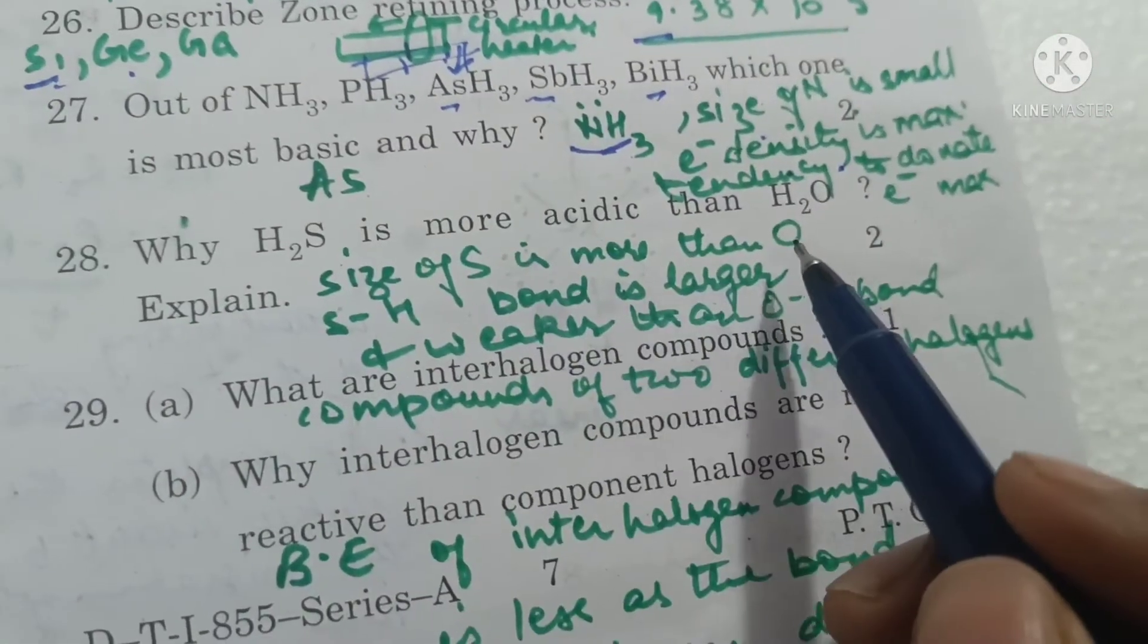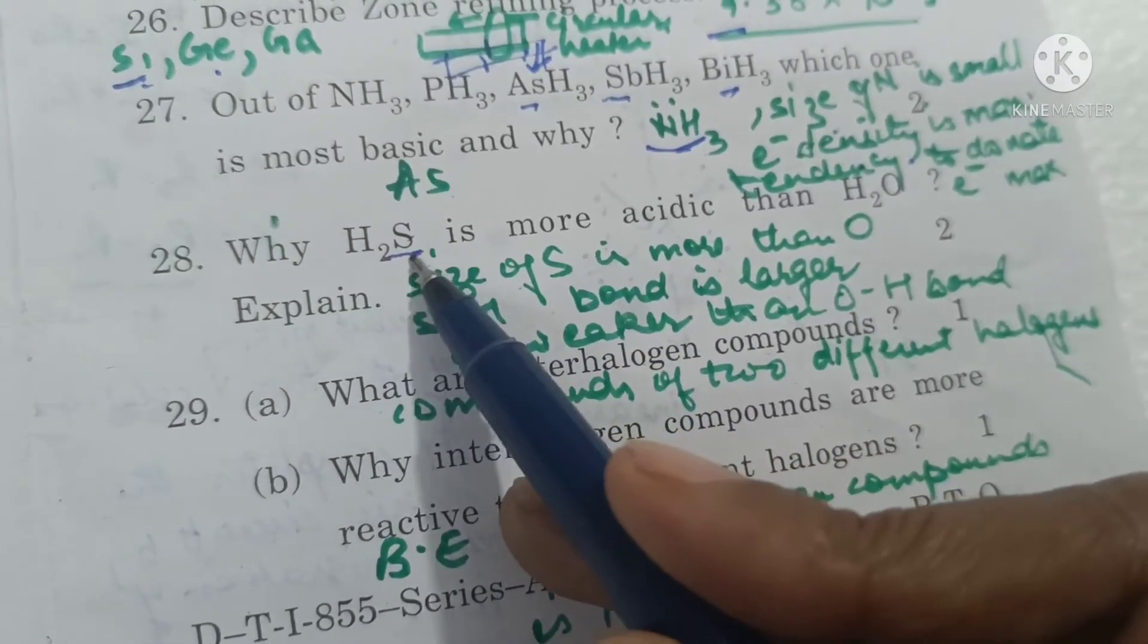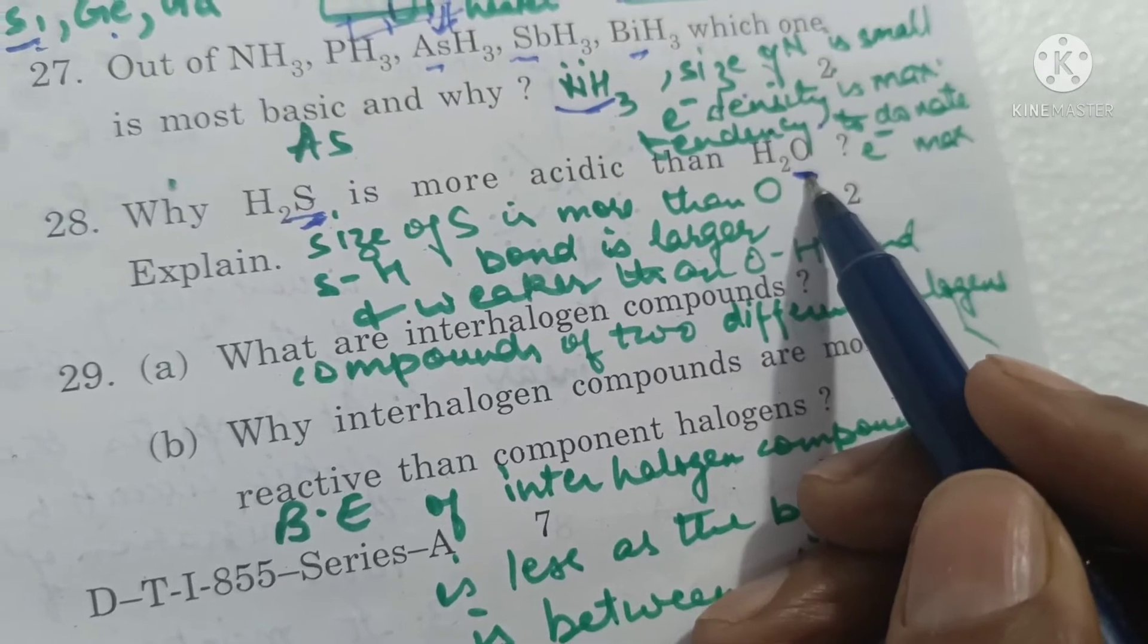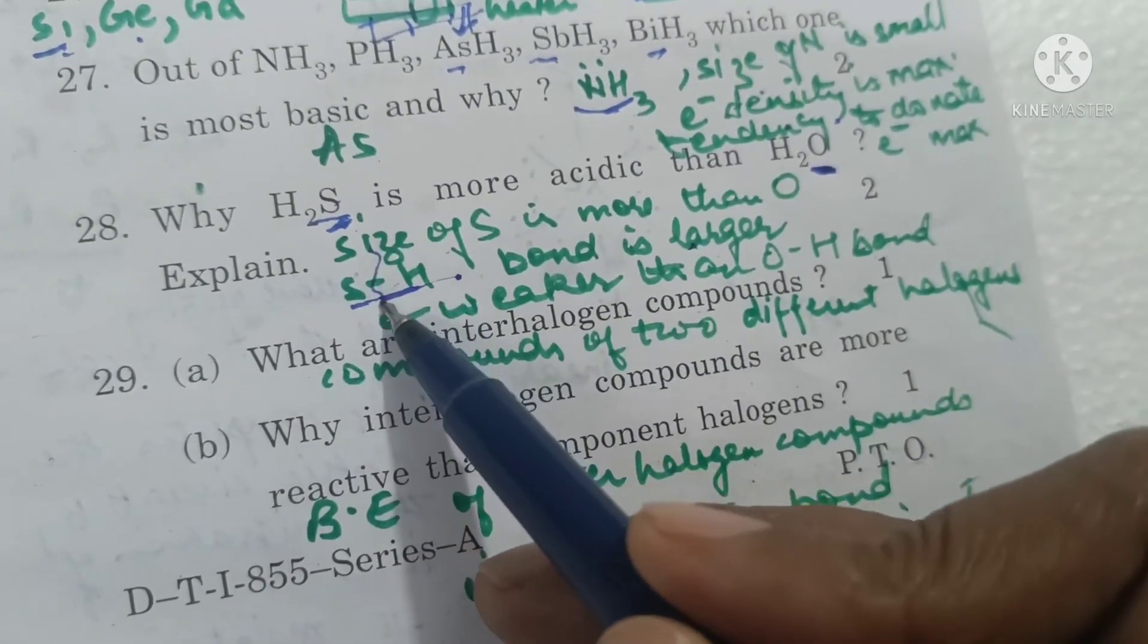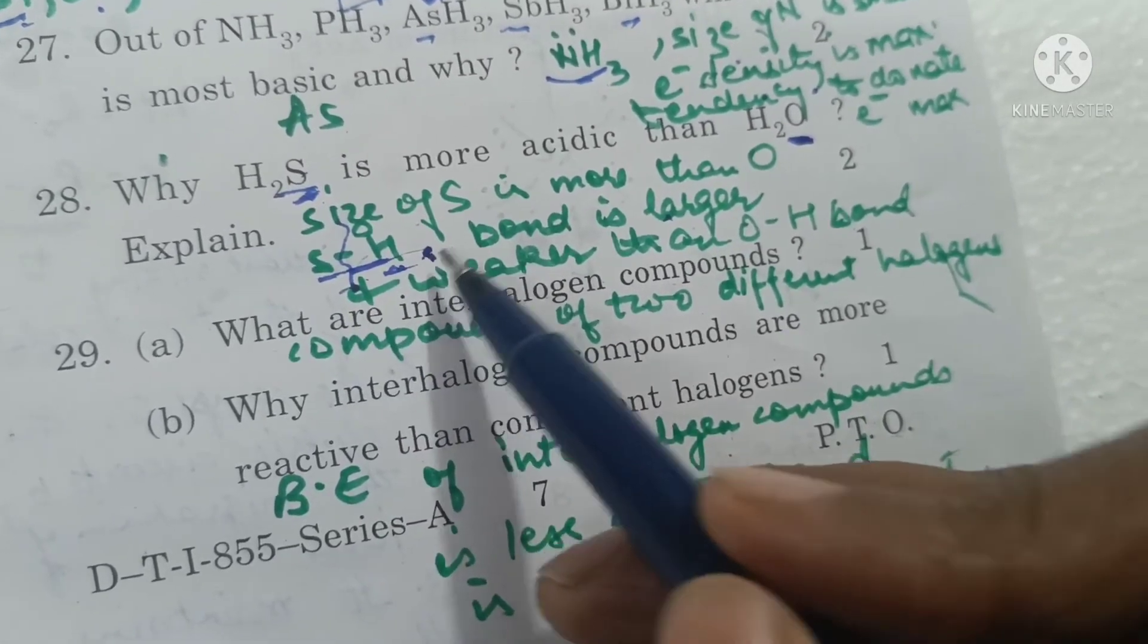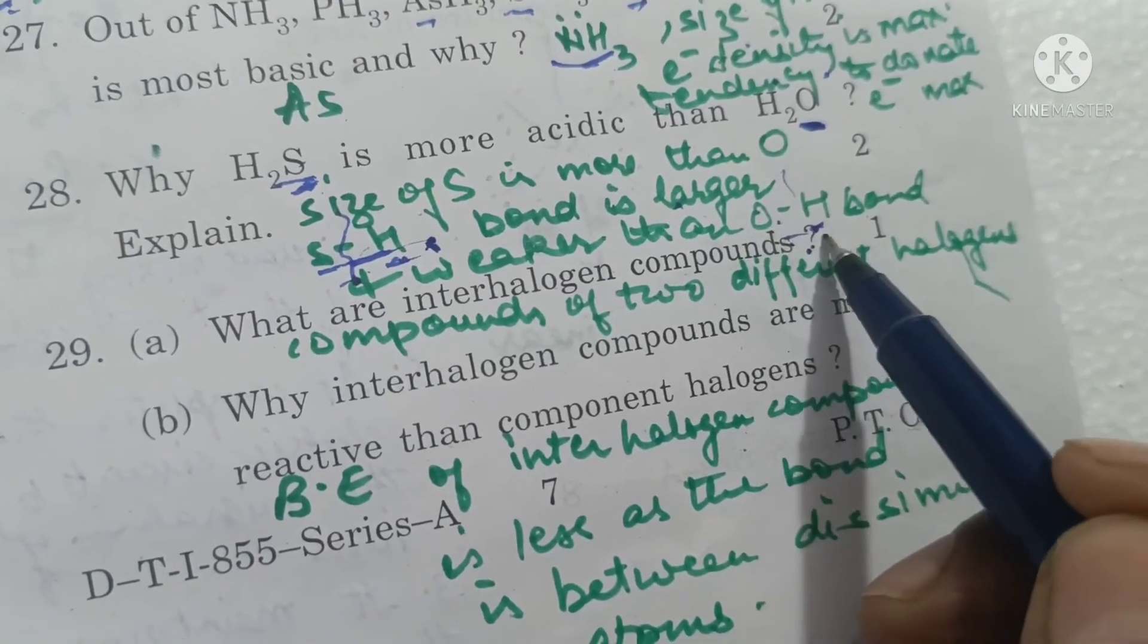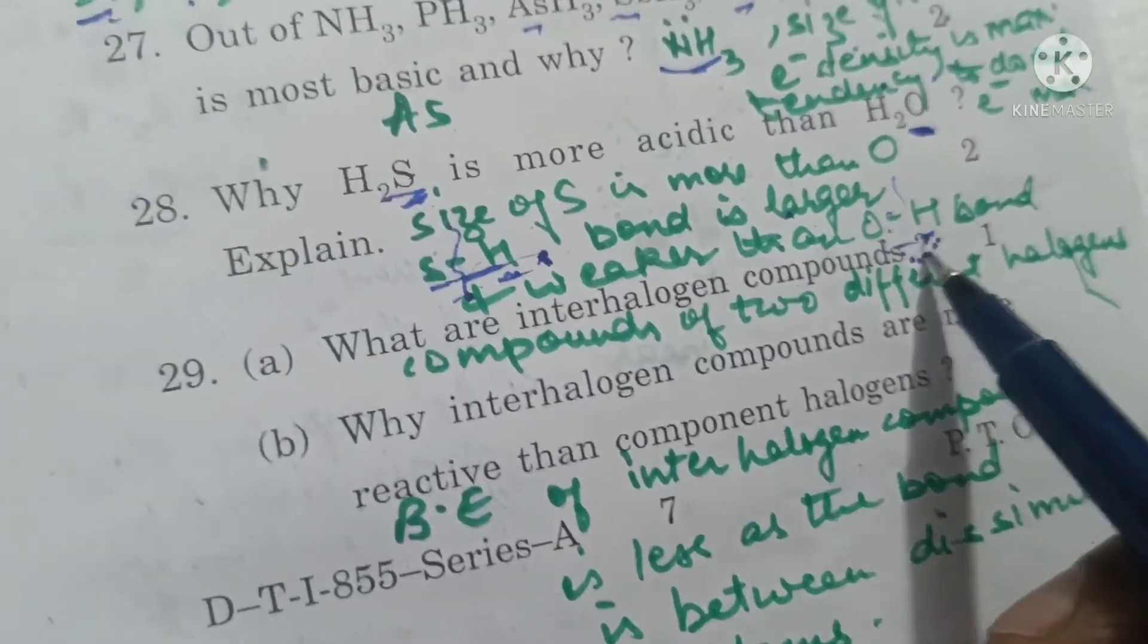Why H2S is more acidic than H2O? This is because size of sulfur atom is bigger than size of oxygen atom. As S-H bond is larger, it is easier to break and release H, so it is more acidic. Whereas O-H bond is smaller, it is more difficult to break, its bond dissociation energy will be more, so it is weaker acid.